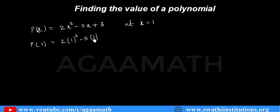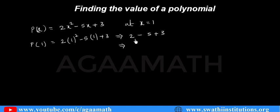If you simplify: 1 squared is 1, so 2 into 1 is 2, minus 5 into 1 is 5, plus 3. That gives 2 minus 5, which is minus 3, and minus 3 plus 3 is 0. So the value of the polynomial p of 1 — meaning 2x squared minus 5x plus 3 at x equals to 1 — is 0.